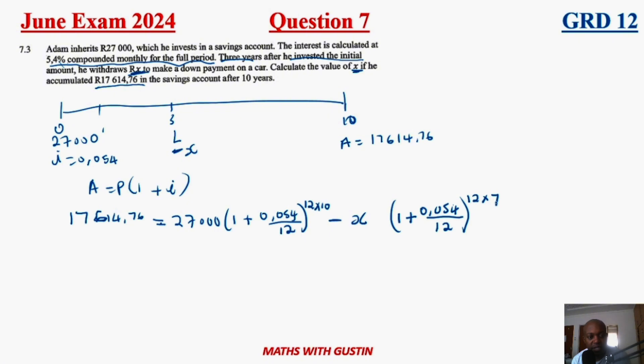Therefore, if you go into your calculator, you should be able to solve this. What you're going to do is you're going to take this whole to that side. So what you're gonna have is 17,614.76 minus 27,000 times (1 + 0.054/12)^120 equals to minus x.